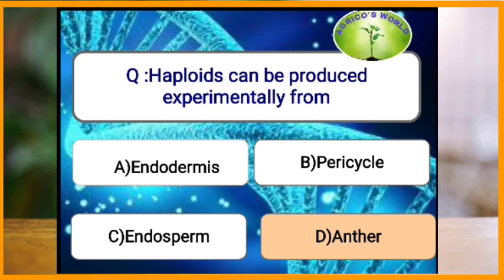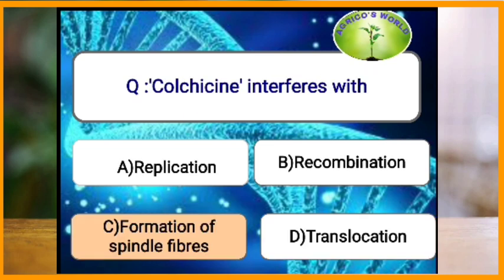Haploids can be produced experimentally by anther culture. Colchicine interferes with the formation of spindle fibers and hence is responsible for chromosome doubling.